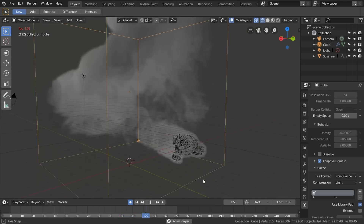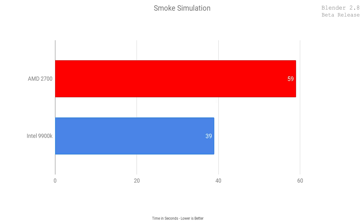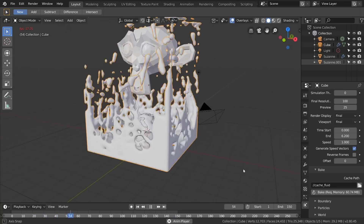On to the smoke benchmark. The simulation took 59 seconds to complete on the Ryzen system and 39 seconds on the Intel system — 41% faster on Intel. The smoke simulator in Blender really focuses on single-core performance, and Intel took advantage of that with a nice 41% increase.